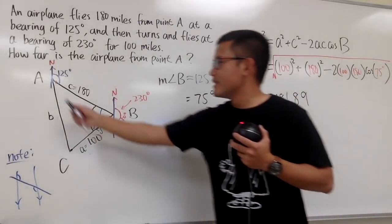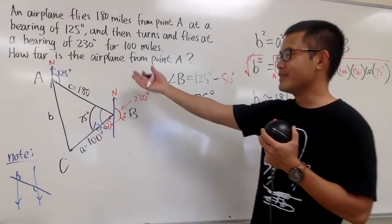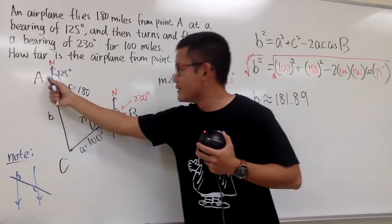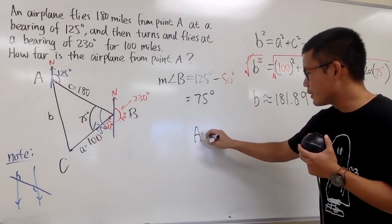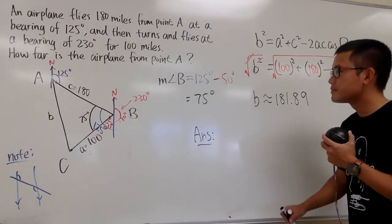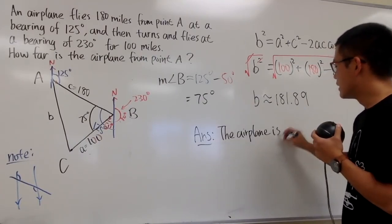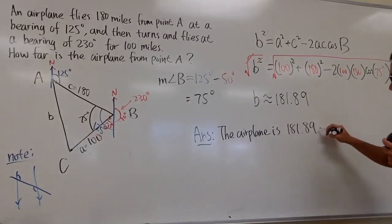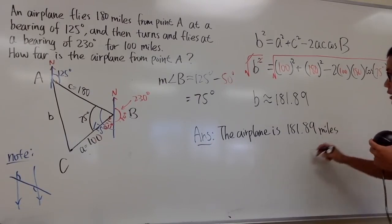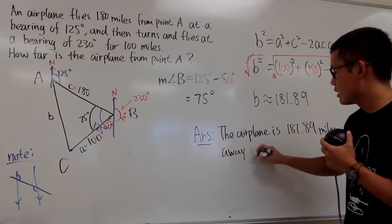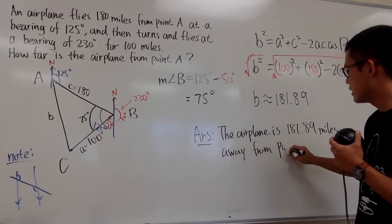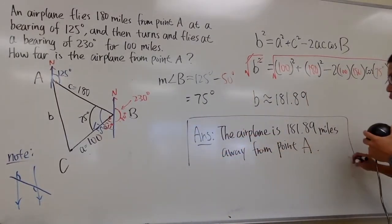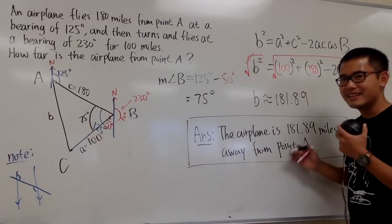That side represents the distance from the airplane to point A. Writing the complete answer: the airplane is about 181.89 miles away from point A.